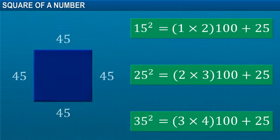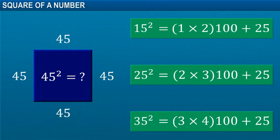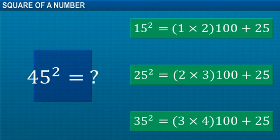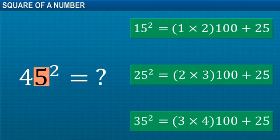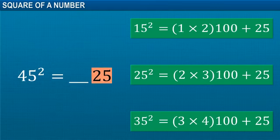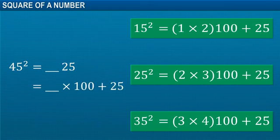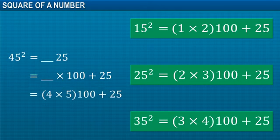Based on this pattern, can you predict the square of 45? The last two digits of the square of a number ending in 5 are always 25. Consider the digit before 5 and then multiply this number with its next whole number.